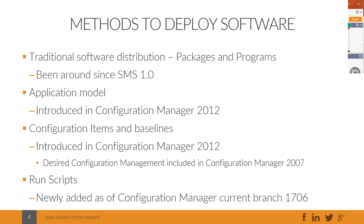When Microsoft released Configuration Manager 2012 almost a half-dozen years ago, they added a new software management solution called the Application Model. This was introduced in the 2012 release and is their preferred way of doing software distribution in Configuration Manager. You may also be familiar with configuration items and baselines for checking compliance or monitoring configuration drift, but you can also use them as a means to deploy software — also introduced in ConfigMgr 2012.